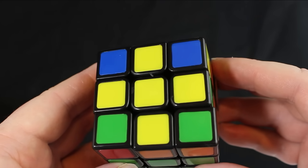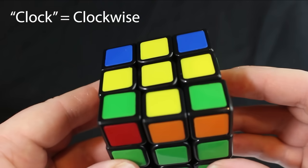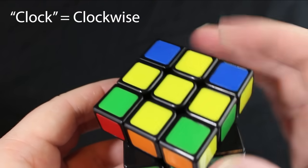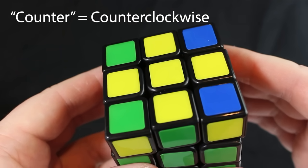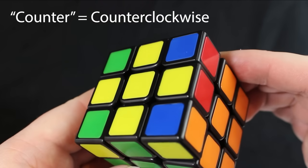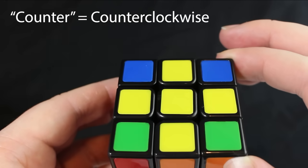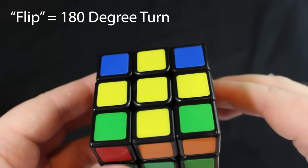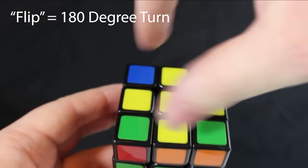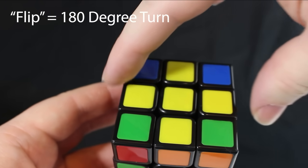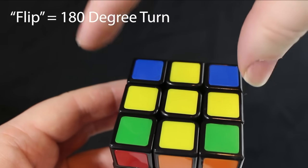By the way, clock means clockwise. If I were to turn the top of this cube clockwise I would turn it like this. Counter means counterclockwise. If I were to turn the top of this cube counterclockwise it would go like this. And flip is a 180 degree turn like this. So my finger and thumb will just switch places. If I were to turn the top as a flip it would do this.